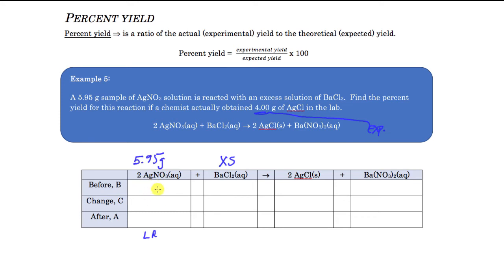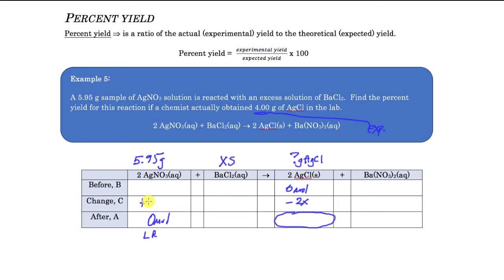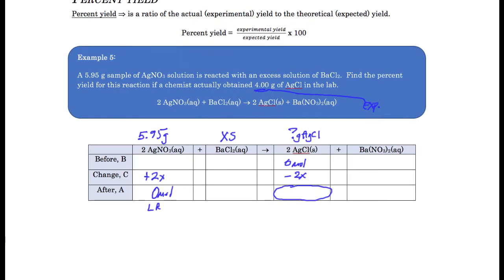We need to use stoichiometry to figure out how many grams of silver chloride we should have gotten if we do this reaction completely — because if the silver nitrate runs out and goes to zero, how much silver chloride will form? Remember this starts at zero and goes up by 2x, while silver nitrate goes down by 2x. The ratio between them is a one-to-one ratio, which makes your calculations a bit easier.